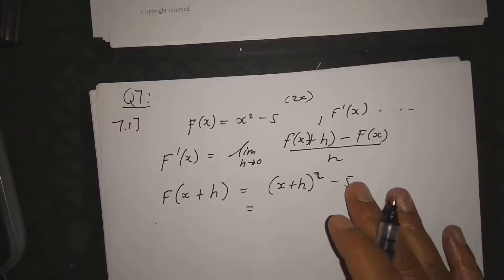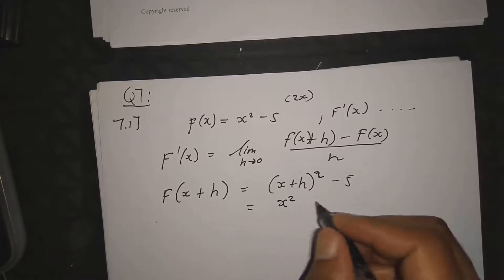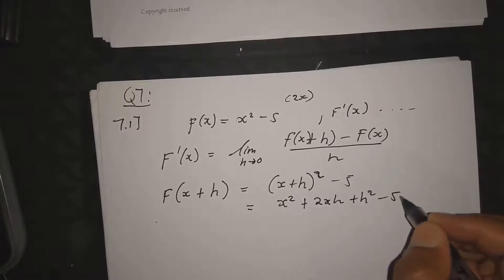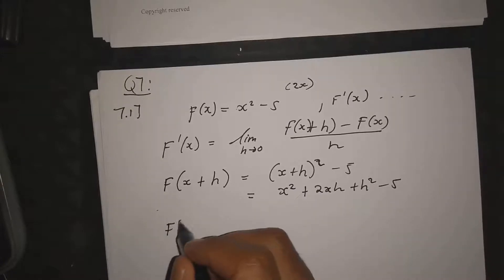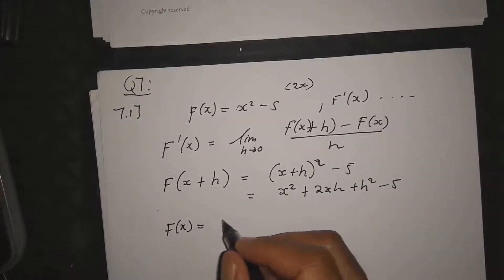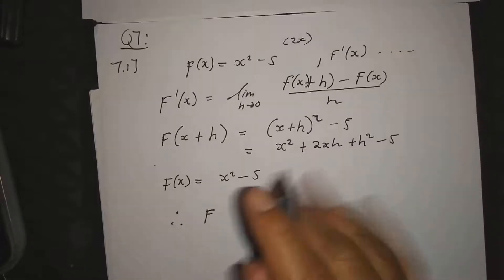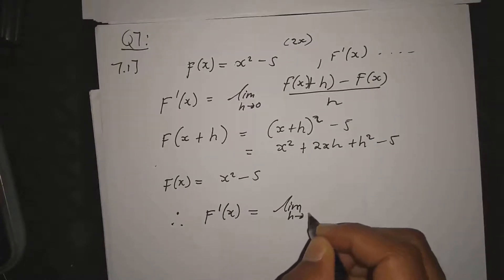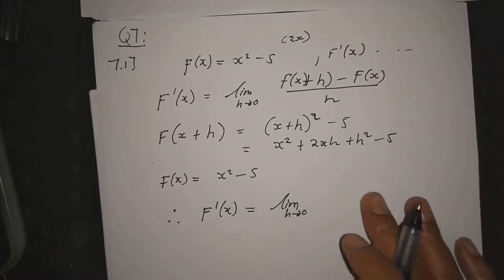Now we simplify inside the limit. Expanding (x + h)² gives x² + 2xh + h² minus 5. We also have f(x) which is x² - 5. So f'(x) equals the limit as h approaches zero of [(x² + 2xh + h² - 5) - (x² - 5)] divided by h.